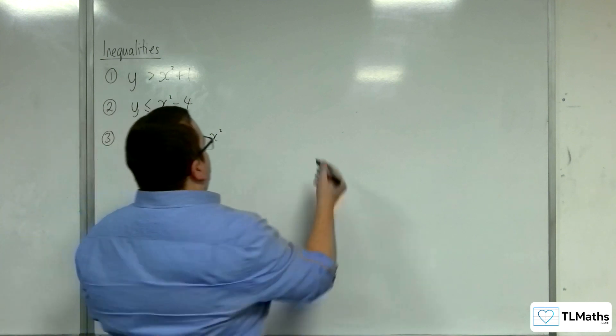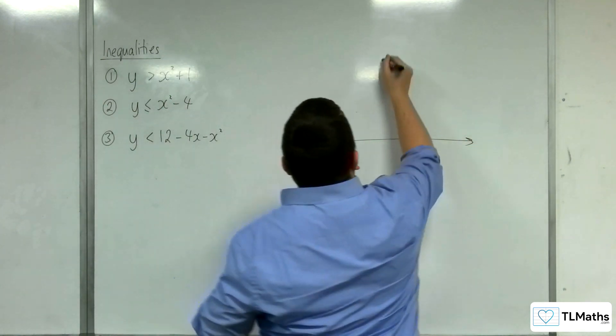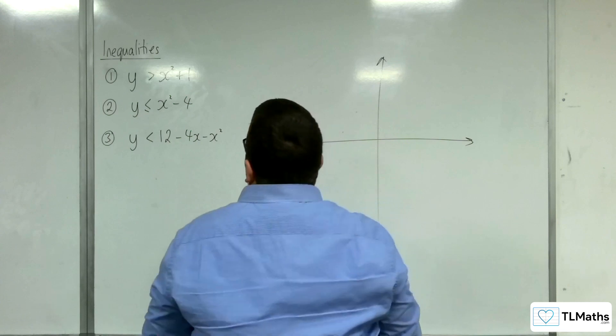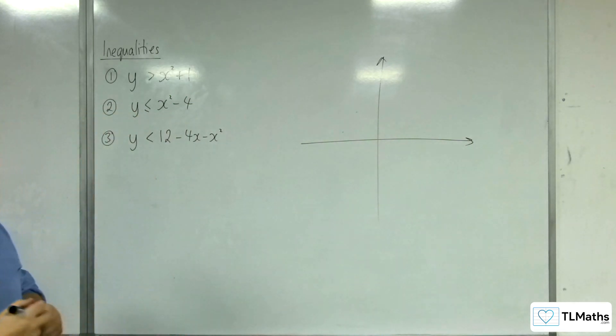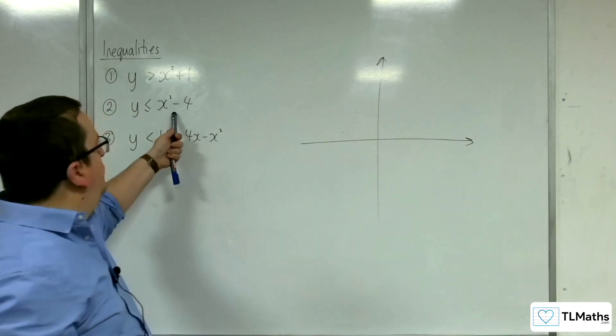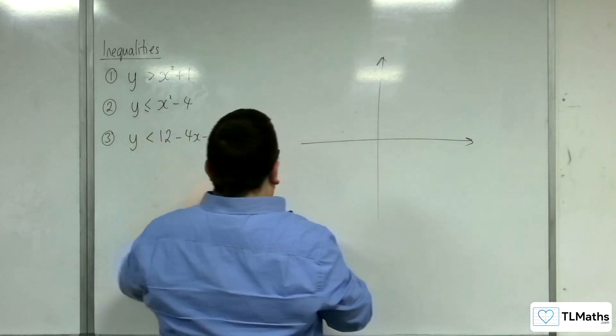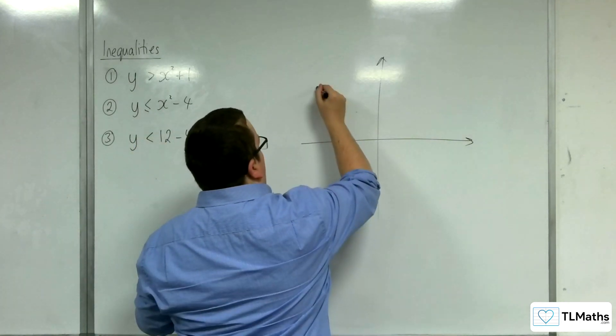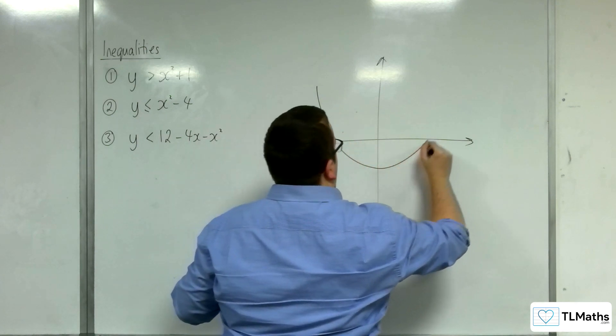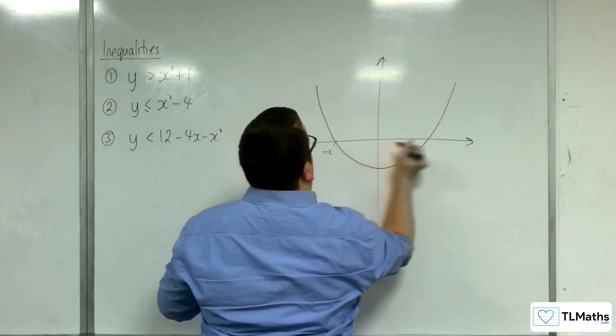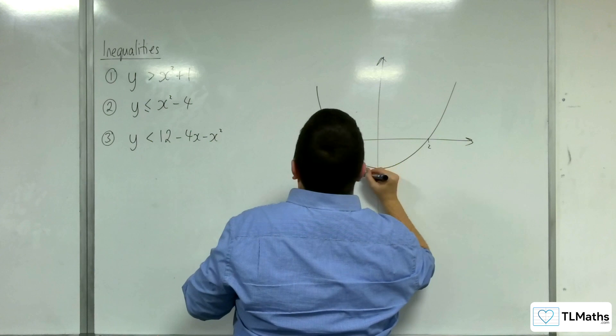Right, number two. Y is less than or equal to x squared take away four. So, that's going to be a parabola going through two and minus two on the x-axis. And it's a solid curve. So, it'll look something like this. Minus two plus two and that's minus four.